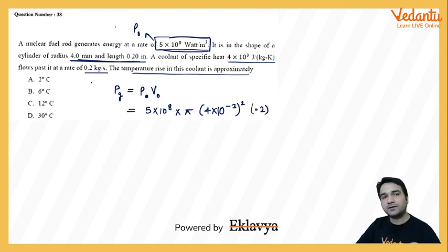This is the generated amount of power in the cylinder. And if we look at the temperature of the coolant, the amount of power to change the temperature of the material is represented by q equals m into s into delta T.